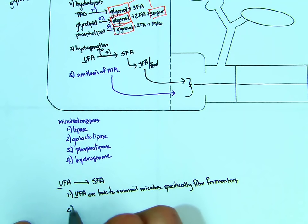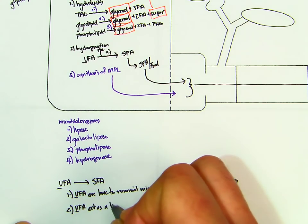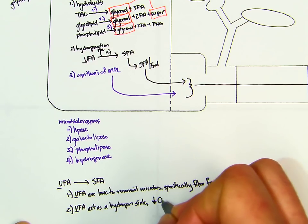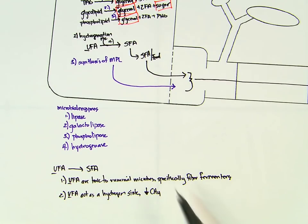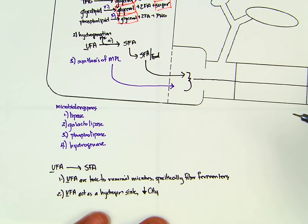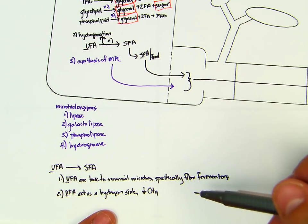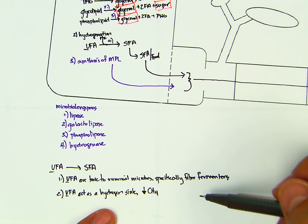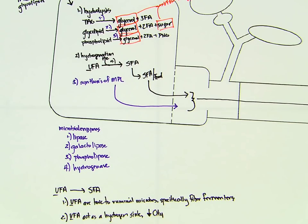The other important thing is that unsaturated fatty acids act as a hydrogen sink — a place for the microbes to get rid of hydrogen — which we'd expect to decrease methane. If we kill off the fiber fermenters, that decreases the amount of acetate produced, and acetate production favors methane production. When you kill fiber fermenters, you end up with more starch fermenters, which generally favor propionate production and decrease methane. And glycerol being fermented up here also favors propionate, further decreasing methane.